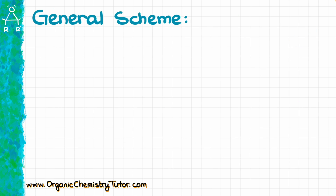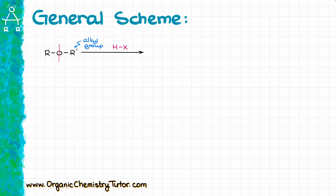First, let's do a quick review of how ether cleavage works. Ethers are molecules where we have two alkyl groups, which may or may not be the same, connected through an oxygen atom. When we're talking about ether cleavage, we're talking about a reaction that breaks our ether. Typically we're going to perform that cleavage in the presence of a hydrogen halide, where X is going to be either chlorine, bromine, or iodine.